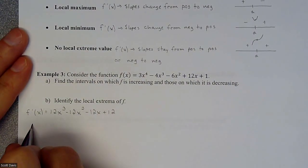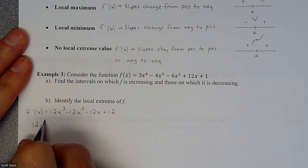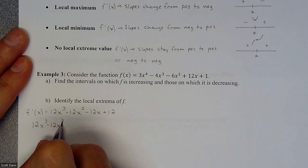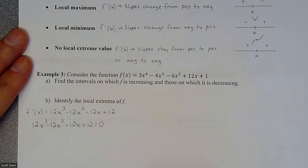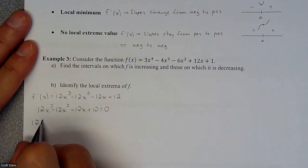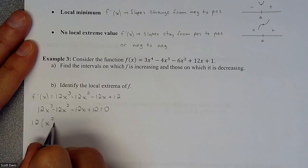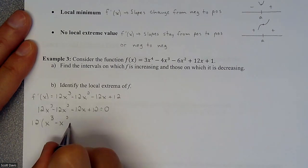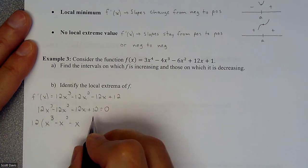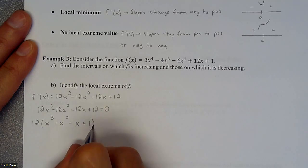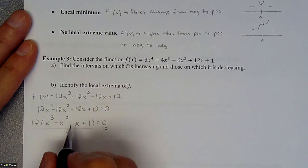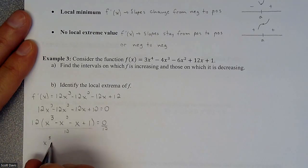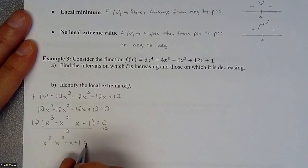Next, we're going to take that cubic equation and set it equal to zero. The first thing I see is I can factor a 12 out of every single piece. So if I take a 12 out, I'm going to get x cubed minus x squared minus x plus one, and that equals zero. We can divide the 12 away, so really we're just looking at when x cubed minus x squared minus x plus one equals zero.